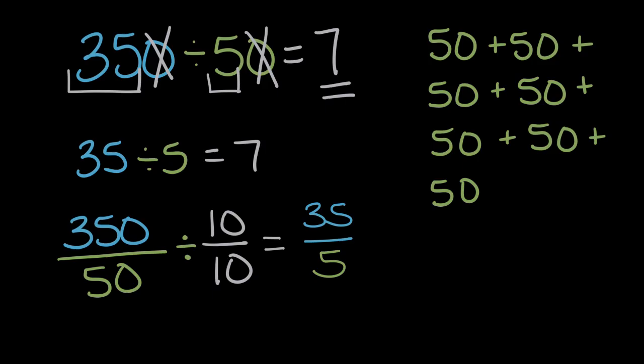So we can cancel those zeros, which leaves us with smaller numbers, and at least for me, I find division a lot simpler when I'm working with smaller numbers.